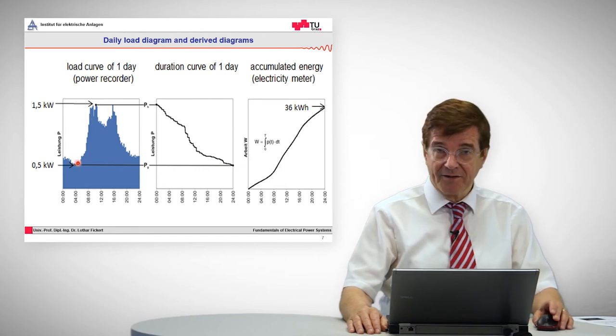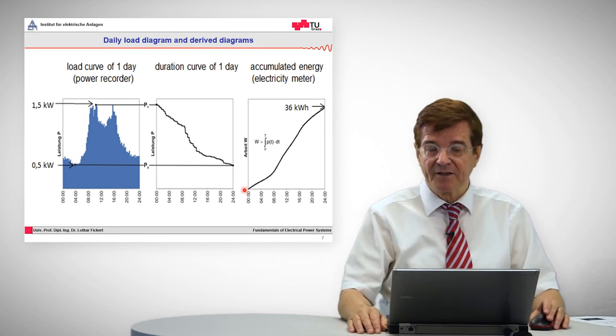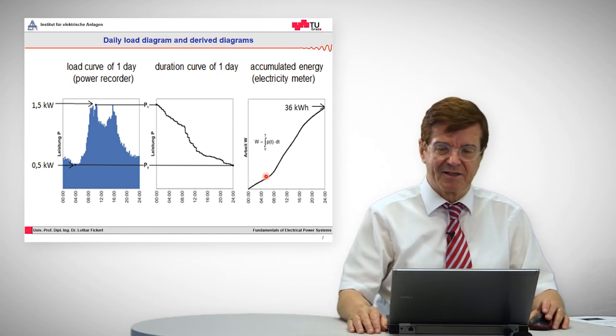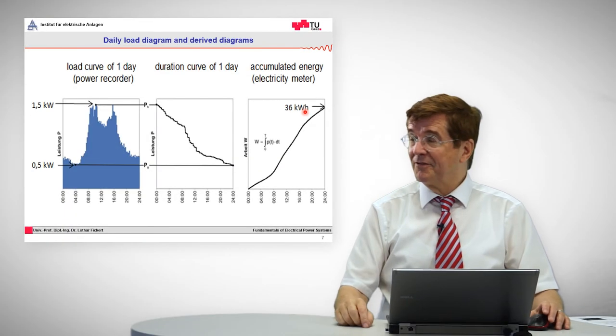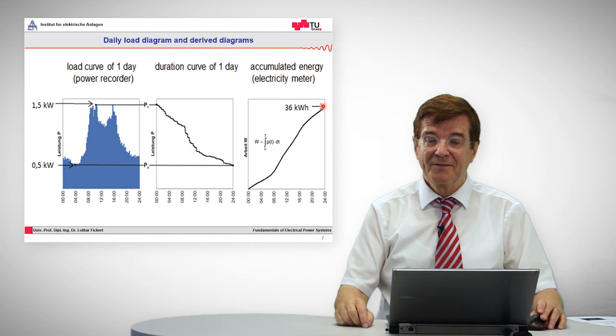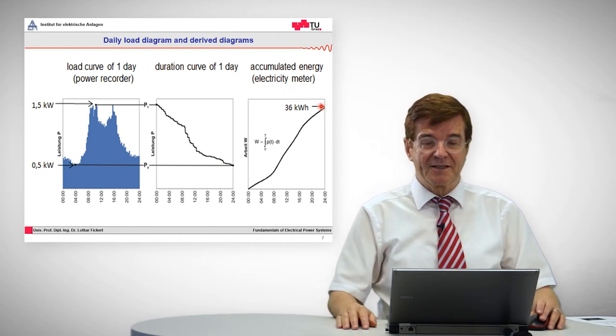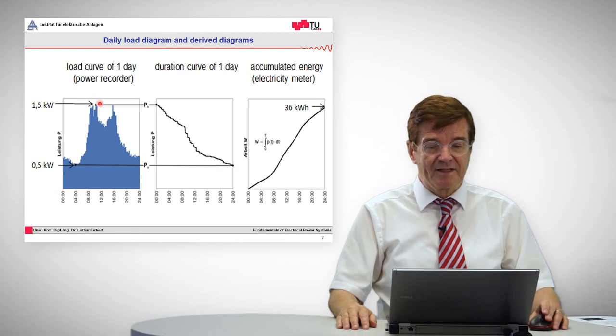In the early morning hours, in contrast, the power consumption is low and this increase of the line is more or less flat. And in the evening, the total area under this curve is given as 36 kilowatt hours, is the area below this load curve.